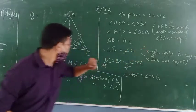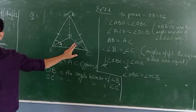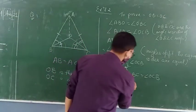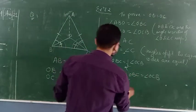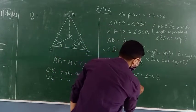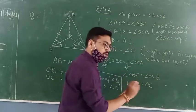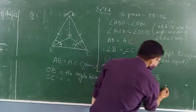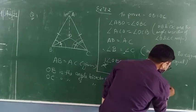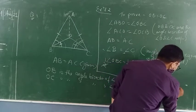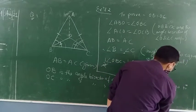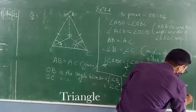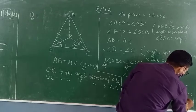Now apply the corollary of this property: if two angles are equal, then their opposite sides are also equal. So you can say OB equals OC, and the reason here is: sides opposite to equal angles are equal.